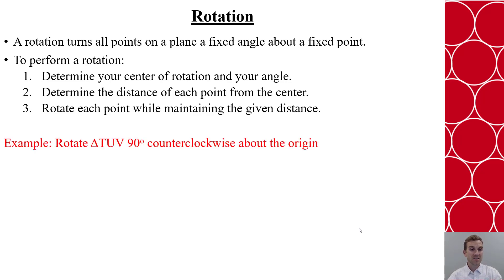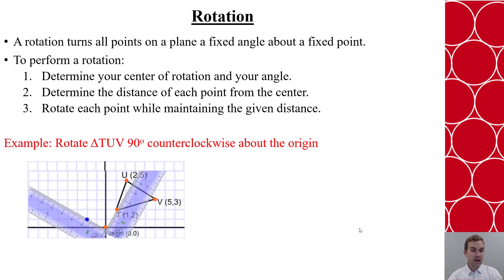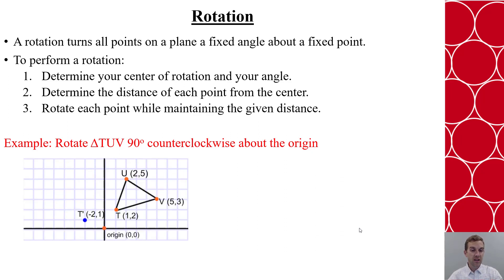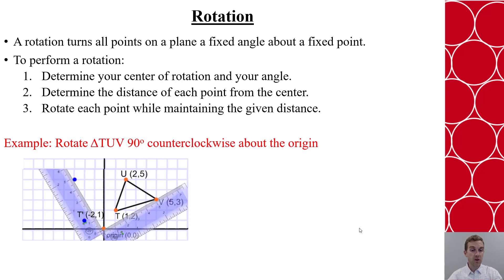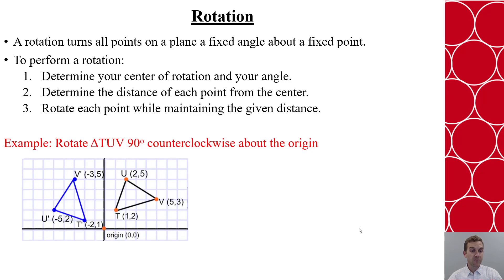So let's say we want to rotate triangle TUV 90 degrees counterclockwise about the origin. So I want to keep the same distance and keep that 90 degree angle. So I can use a ruler to help me out here. And I can create then T prime. And you can see that became negative 2, 1. I could then go to V prime, keeping that angle and that distance. That would give me negative 3, 5. And then U prime will give me negative 5, 2.